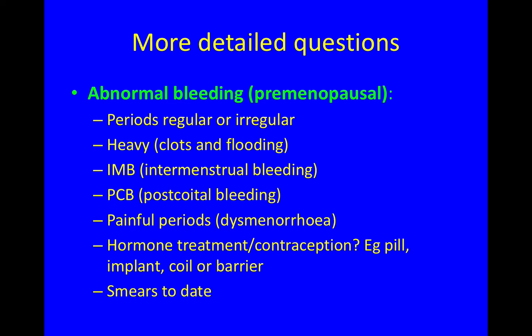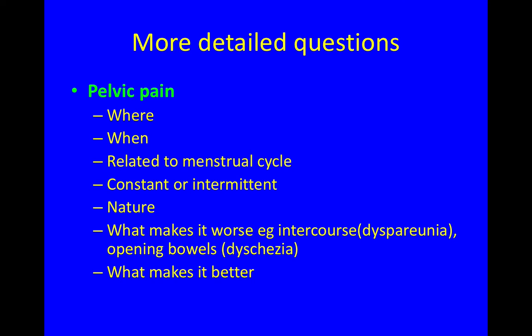Is there any intermenstrual or post-coital bleeding? Are the periods painful? Is she using any hormone treatment or contraception, like being on the pill, implant, coil, or barrier method? And are her smears up to date?